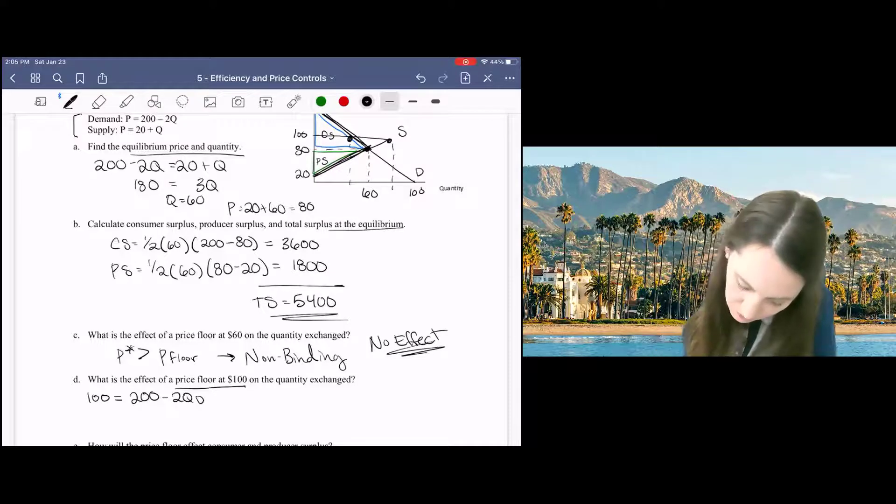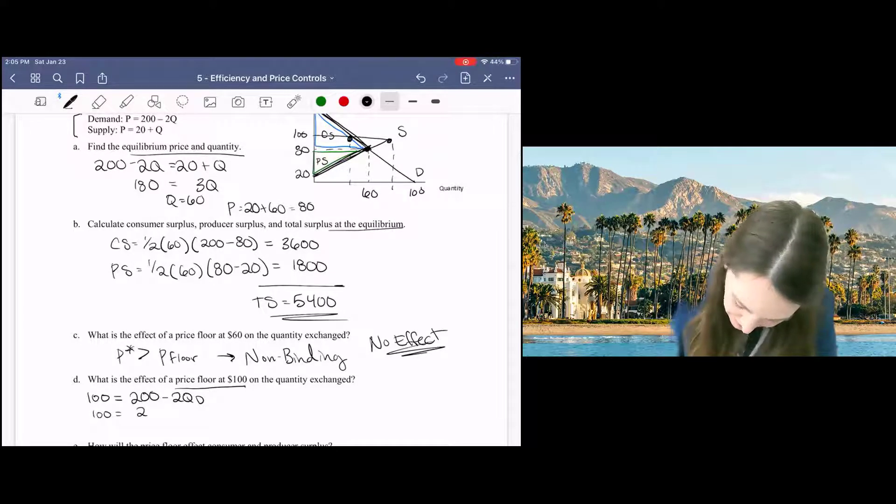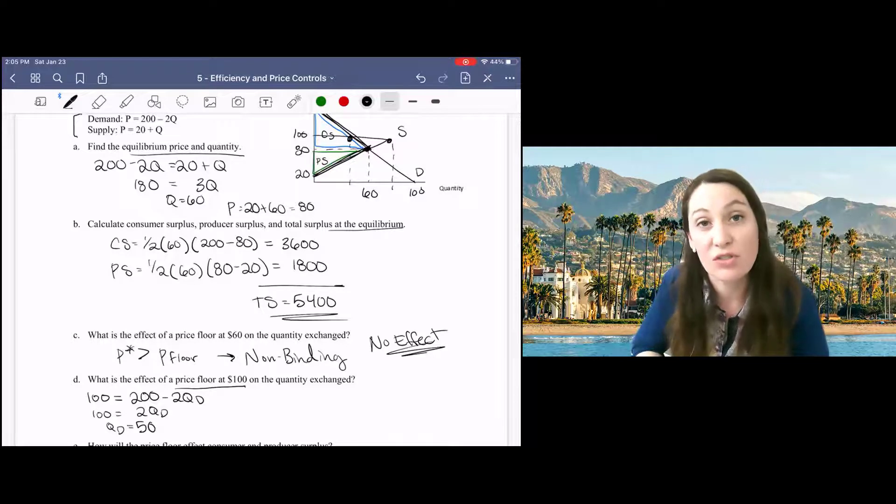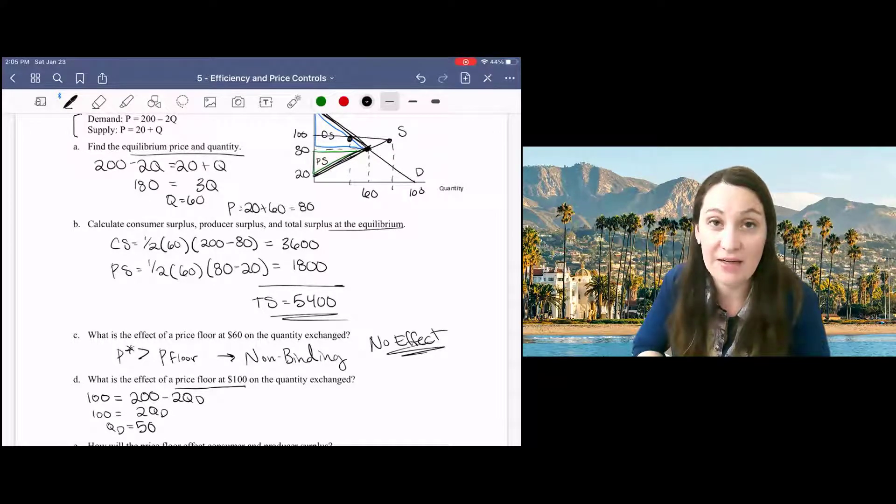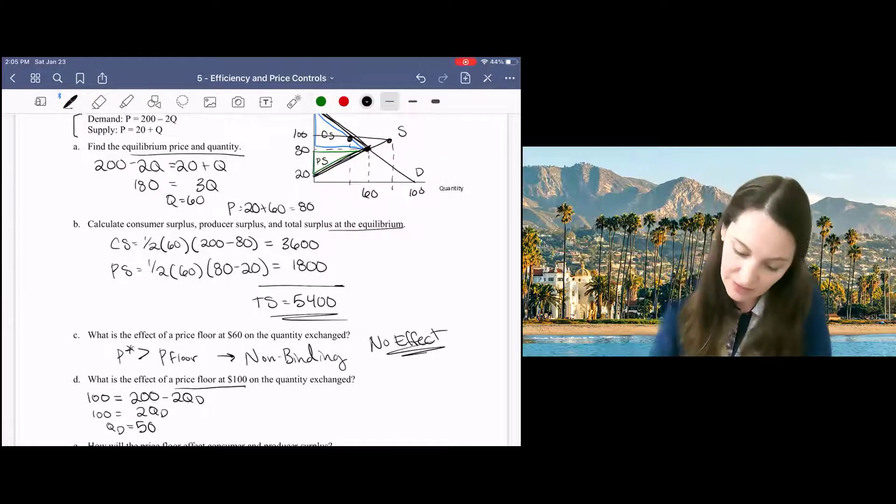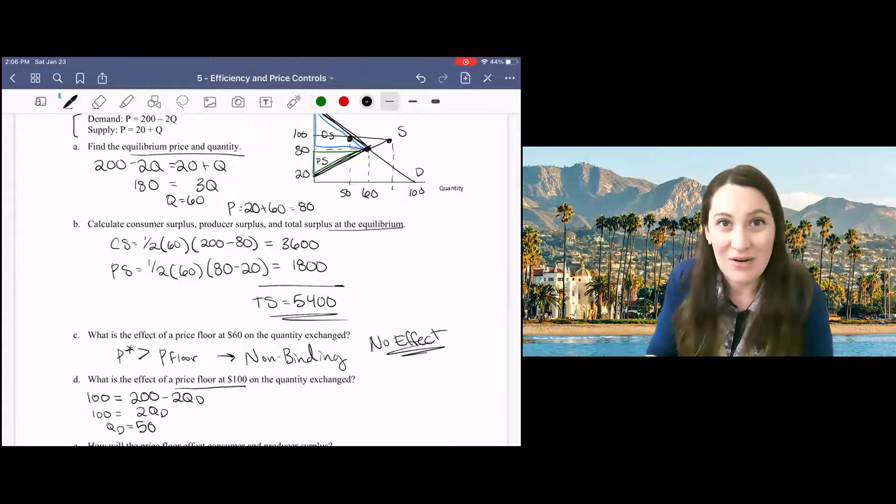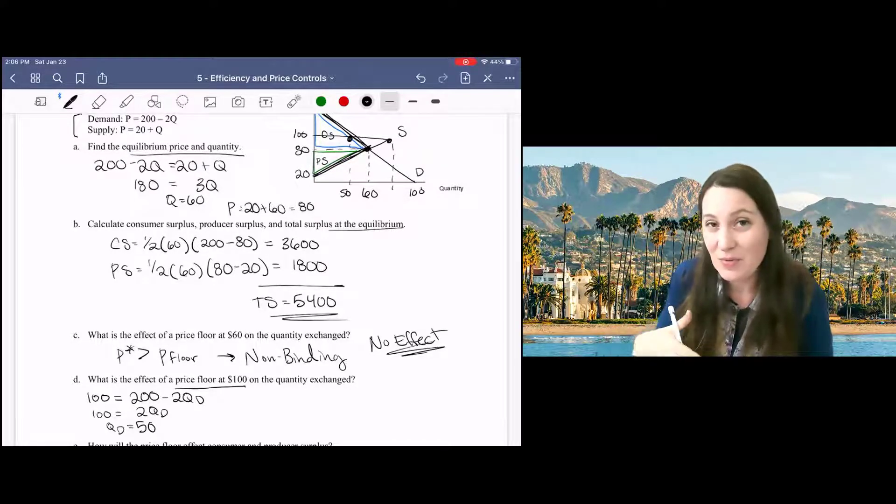For demand, we can see that at a price of 100, the quantity demanded will be 50, which is, of course, lower than the quantity demanded at the market equilibrium. Since the price has gone up, of course, people will buy less.